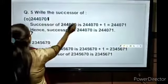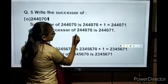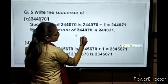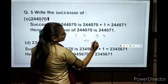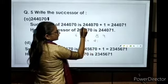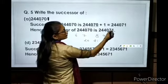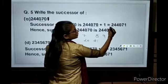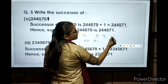Write the successor of 244070. Successor means if I ask for the successor of 6, the answer is 7. If 8, then 9. If 20, the successor is 21. We add one. So 244070 plus one equals 244071.